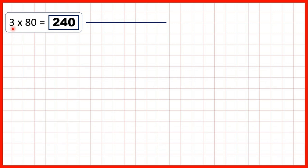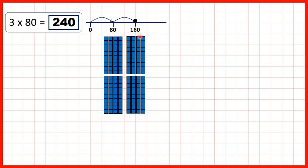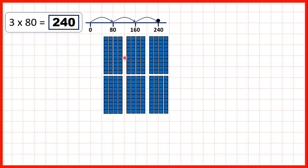Now if we look at these questions more closely: for 3 times 80, we can show 3 jumps of 80. Because 80 is 8 tens, we can show 8 tens below each jump. The next multiple of 80 is 160, and the third jump gives us 24 tens altogether. If we have 24 tens, we have 240 — with a zero as our ones digit. So remember, counting in steps of 80 is just like counting in steps of 8, because with 80, we're adding 8 tens each time.